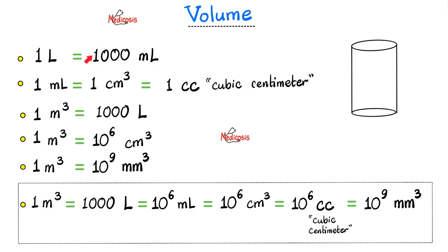Volume conversions. One liter has 1000 mls. One ml equals one cubic centimeter. You can write cubic centimeter like this or like this. CC means cubic centimeter. So there is no difference between the CC and the ml. They are equivalent. One cubic meter equals 1,000 liters. And since one liter contains 1,000 mls, 1,000 times 1,000 equals a million. One cubic meter equals a million cubic centimeters, which is the same as a million mls. You can also arrive at this million by another way. Just convert meter into centimeter.